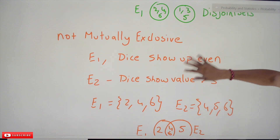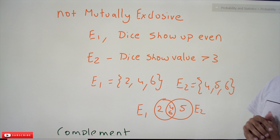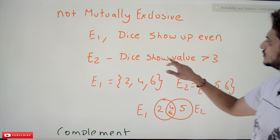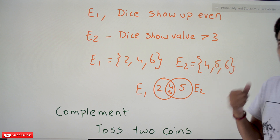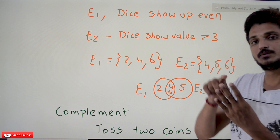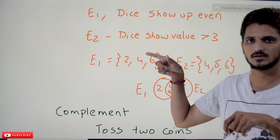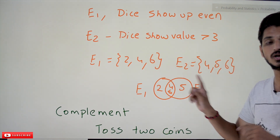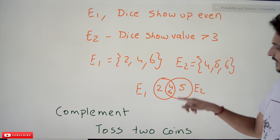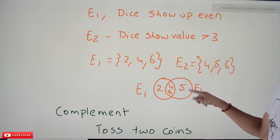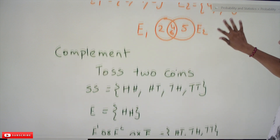Now one more example to understand which events are NOT mutually exclusive. Event E1 is dice shows an even number: E1 = {2, 4, 6}. Event E2 is dice shows a value greater than three: E2 = {4, 5, 6}. If the dice shows 4, it belongs to both E1 and E2 — so occurring of both events at the same time is possible. That's why these two events are not mutually exclusive. The intersection of E1 and E2 = {4, 6}, so these are not disjoint sets — they overlap.